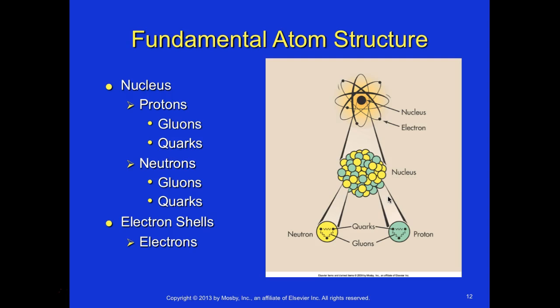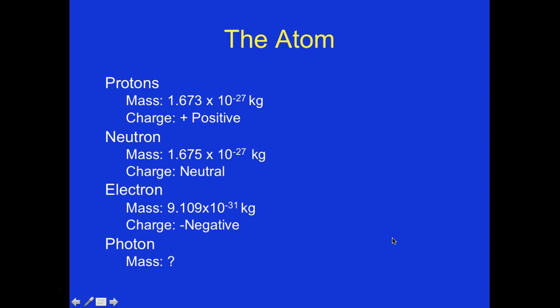The fundamental atomic structure includes the nucleus, which contains protons (made of gluons and quarks) and neutrons (also gluons and quarks), with electron shells surrounding it. Protons have a mass of 1.673 × 10⁻²⁷ kg and are positive. Neutrons have a mass of 1.675 × 10⁻²⁷ kg and are neutral. Electrons have a mass of 9.109 × 10⁻³¹ kg and are negative.